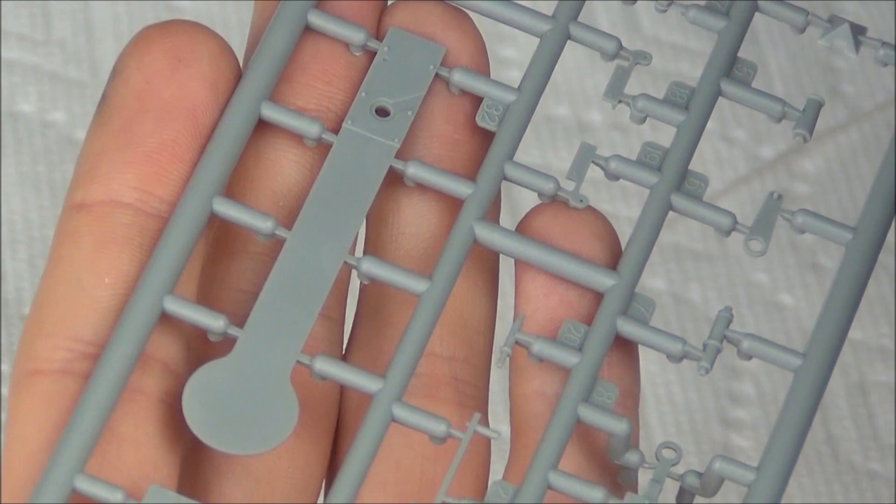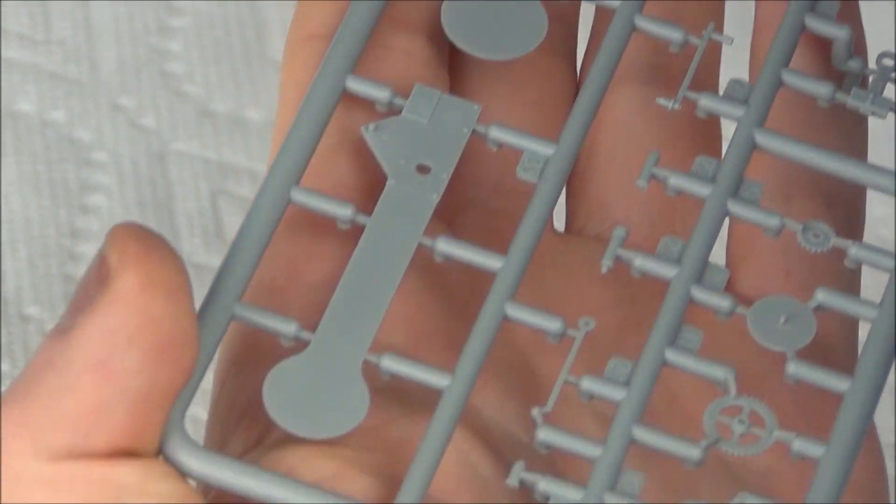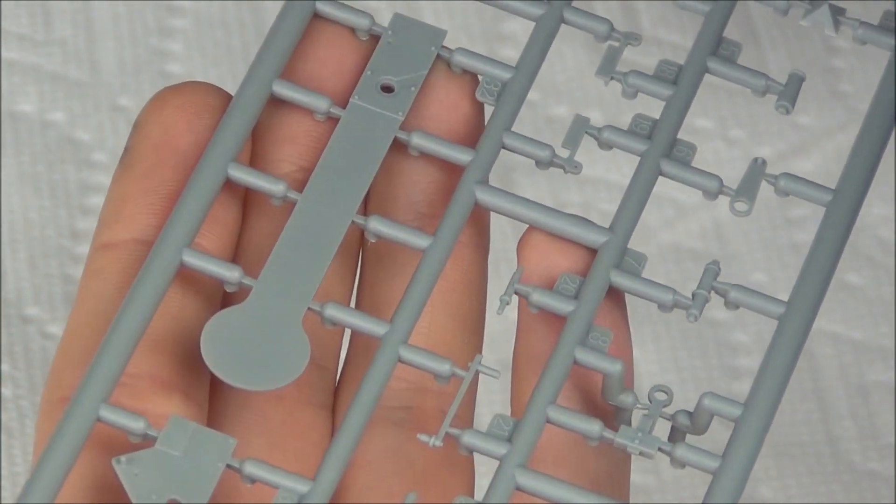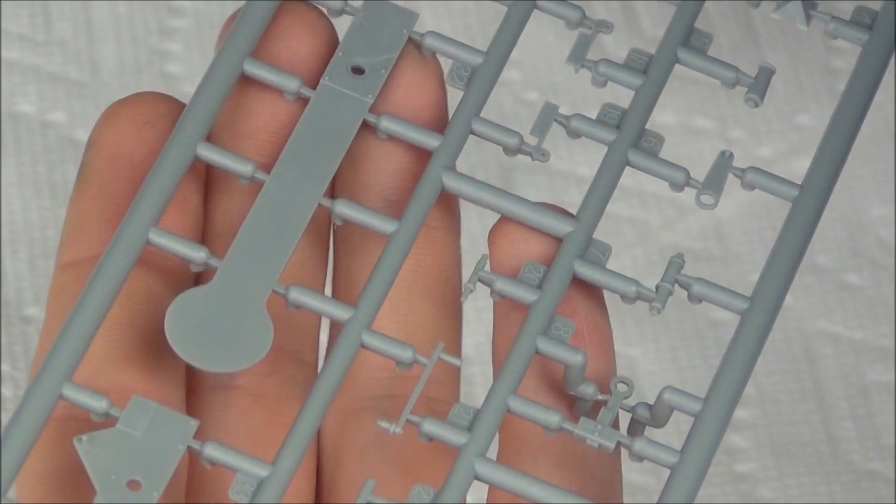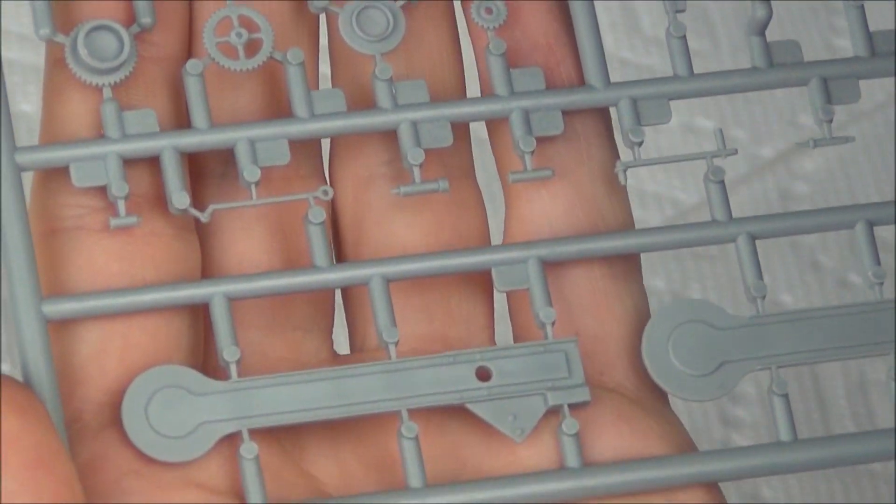For example, looking back at this sprue, there's no pin marks on these signal arms at all. Even though they're big flat pieces molded on both sides that are exposed, there's actually no pin mark or anything like that on them. So that looks really cool.